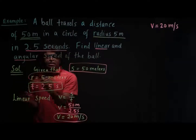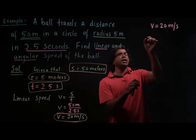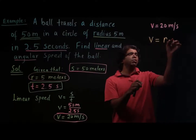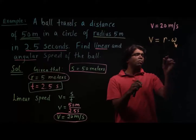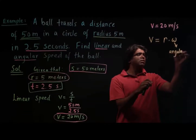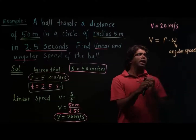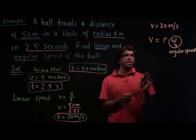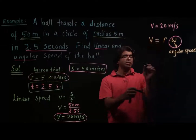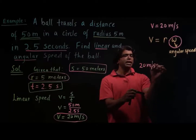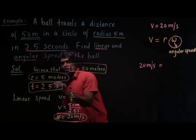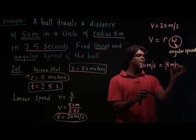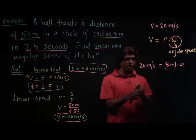We know that the relation between linear and angular speed is: linear speed v is equal to r times omega, where omega is angular speed. That's what we need to find. Substituting the known values: 20 meters per second equals 5 meters times omega.